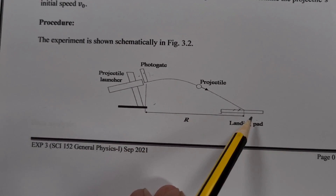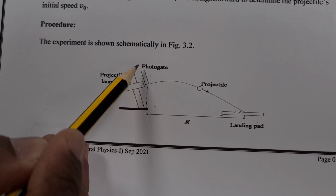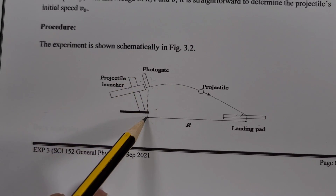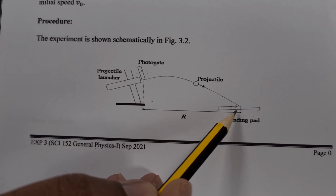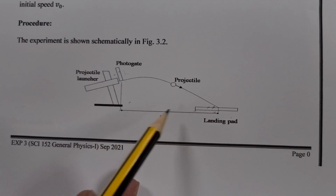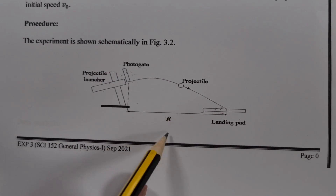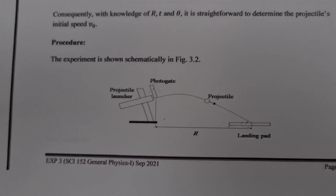We need to find the range — the distance from the level where we shoot the ball to where it exactly hits the pad. That distance is our range.